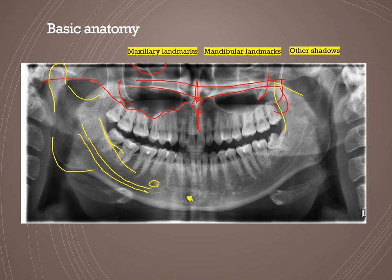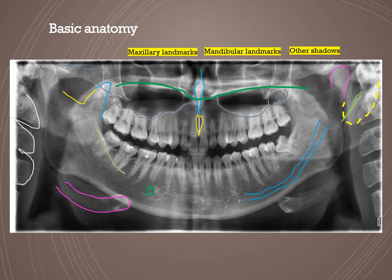Other shadows visible on a panoramic image include the shadow of the ear, cervical spine vertebrae, hyoid bone, and the styloid process. Both maxillary and mandibular landmarks are present in any panoramic radiograph, and it is important to keep looking at panoramic radiographs to recognize all of these anatomical landmarks and delineate the difference between an anatomical landmark and a pathology or finding.